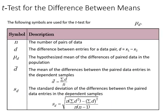So a quick review of our notation here, n is going to be the number of pairs of data, d is the difference between entries for data pairs, so maybe that's student weight and student height. The hypothesized mean of the differences is the mu d, the population mean difference, the d bars are sample difference average.